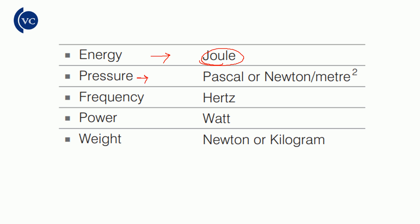Pressure — the SI unit is Pascal, also written as Newton per meter square. The formula is force divided by area. Force is in Newtons and area is in meter square, so pressure unit is Newton per meter square, which is called Pascal.